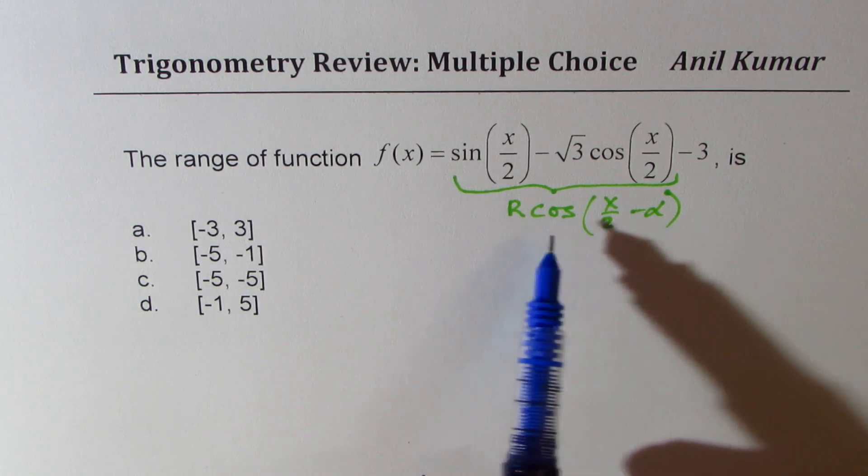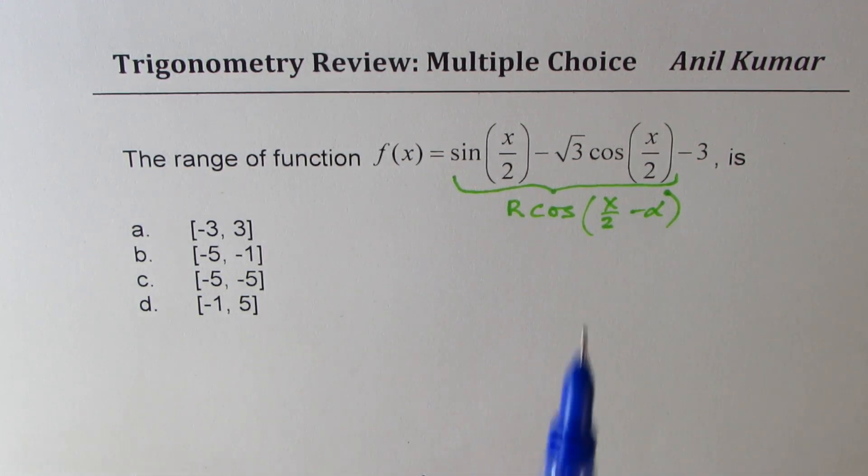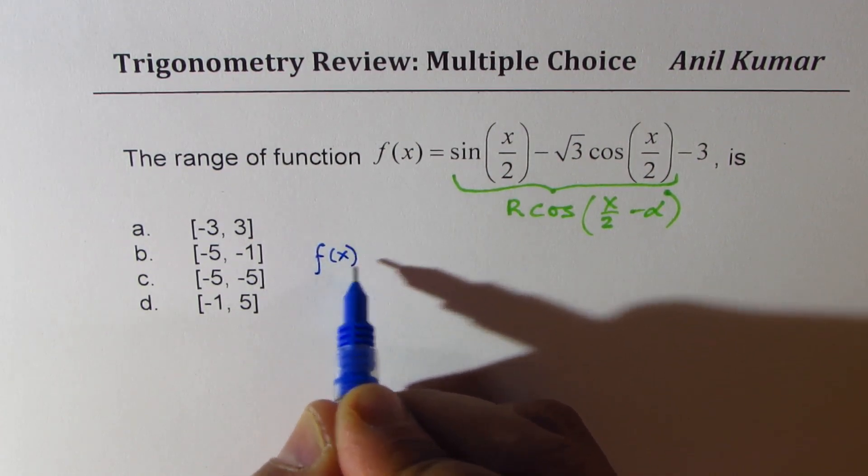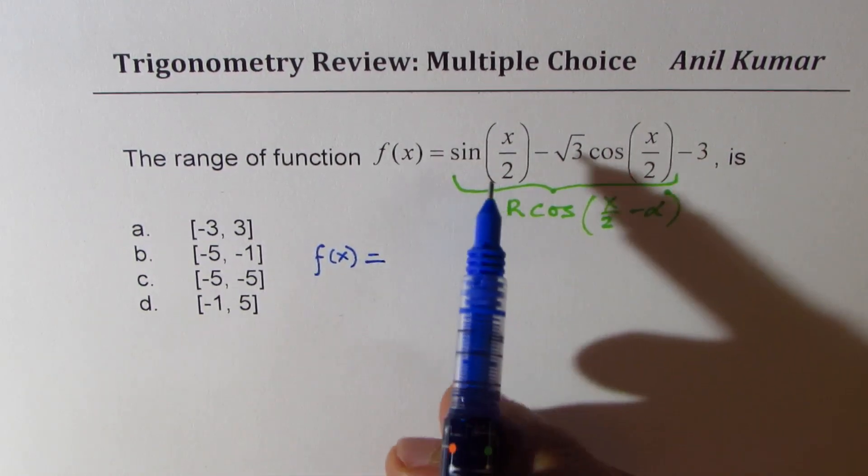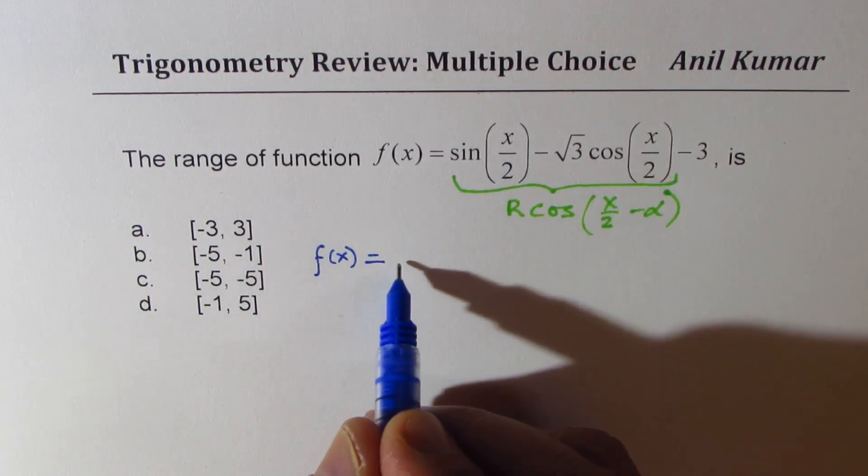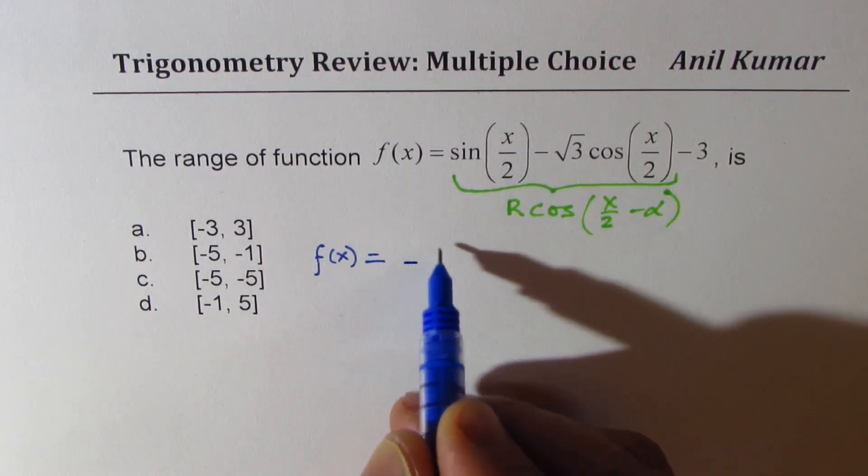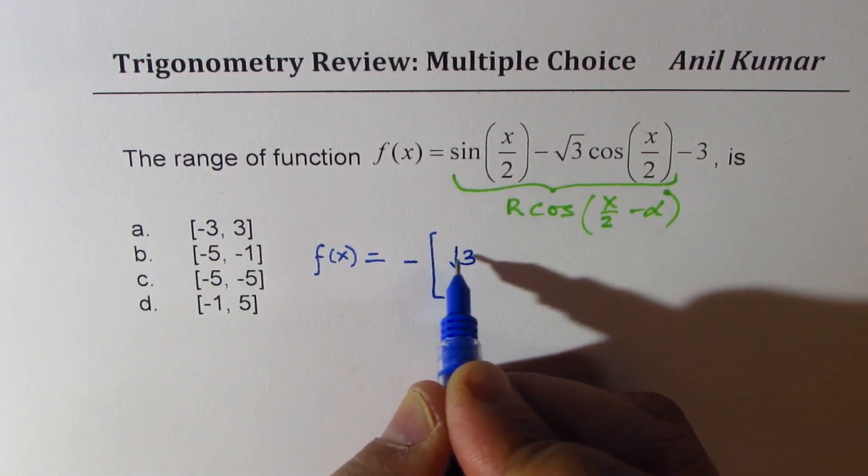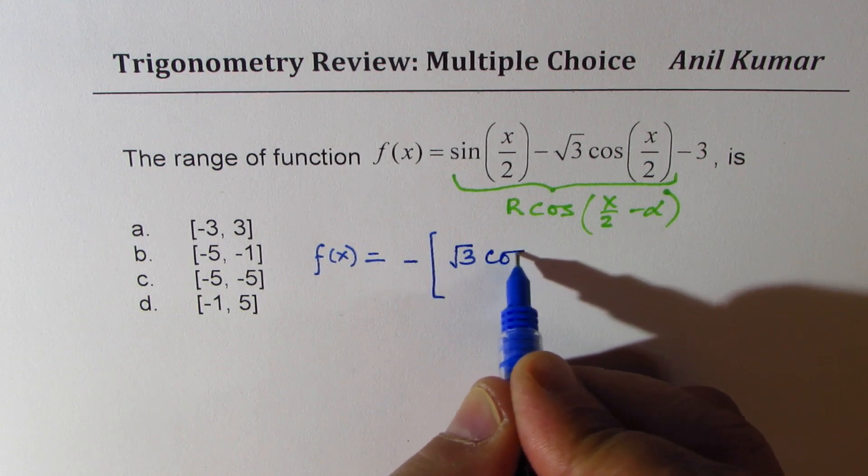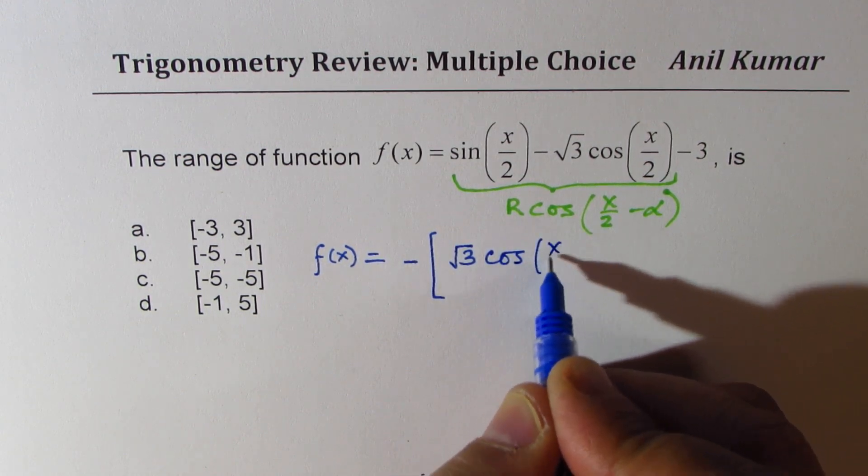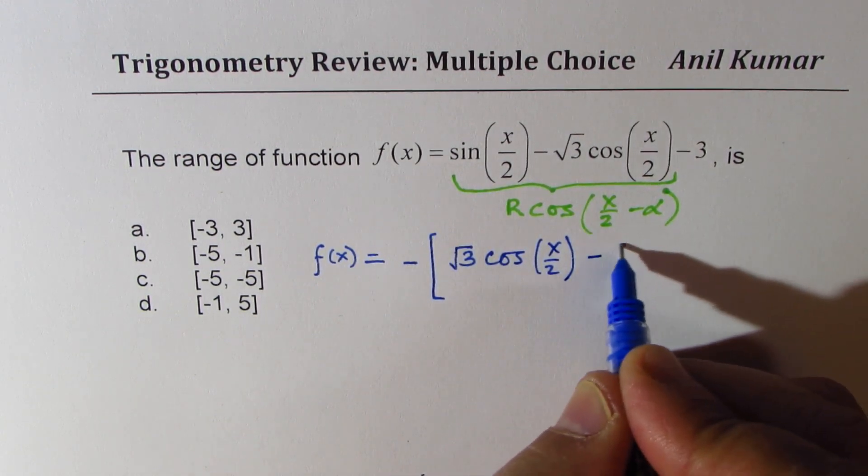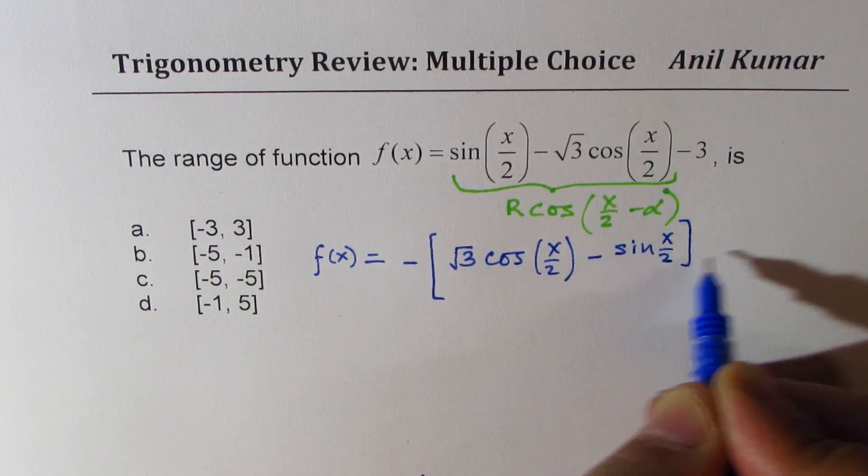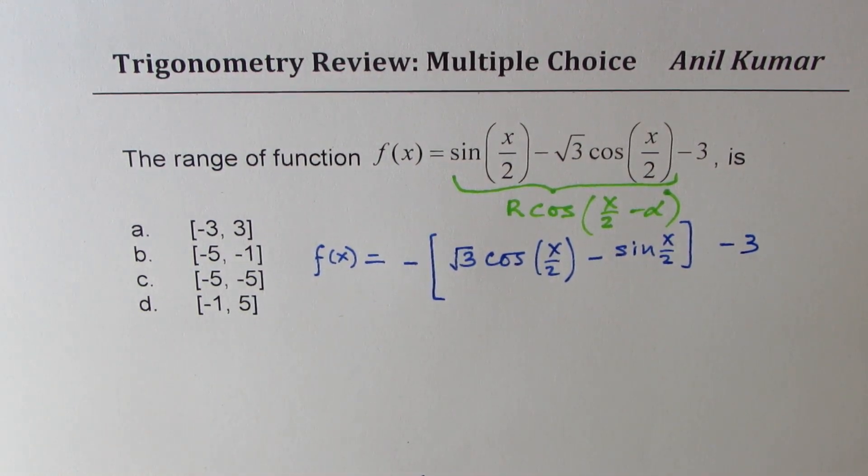Let me rewrite this function as f(x) equals - what I will do here is I'll take minus outside so I have square root of 3 cos x by 2 minus sine x by 2 minus 3.